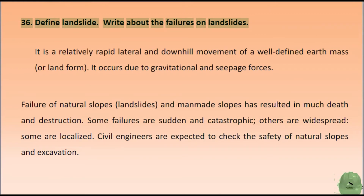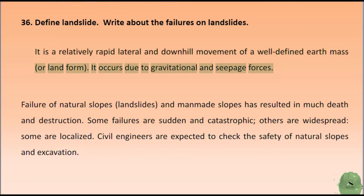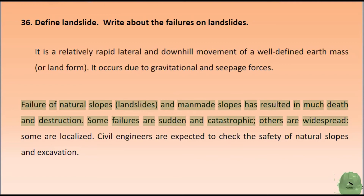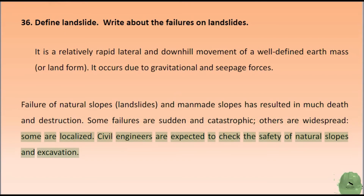Define landslide. A landslide is a relatively rapid lateral and downhill movement of a well-defined earth mass or landform. It occurs due to gravitational and seepage forces. Failure of natural slopes, landslides, and man-made slopes has resulted in much death and destruction. Some failures are sudden and catastrophic, others are widespread, and some are localized. Civil engineers are expected to check the safety of natural slopes and excavations.